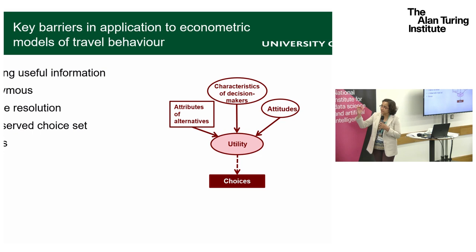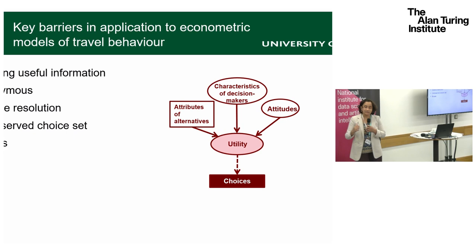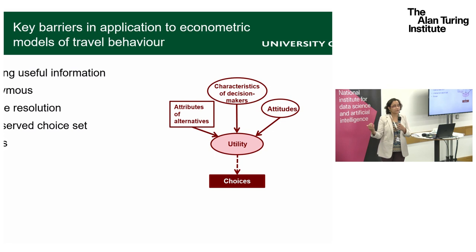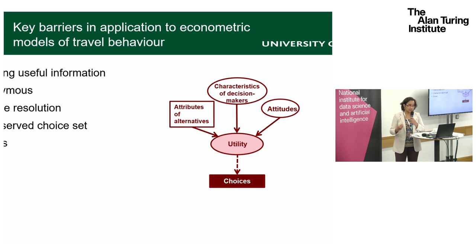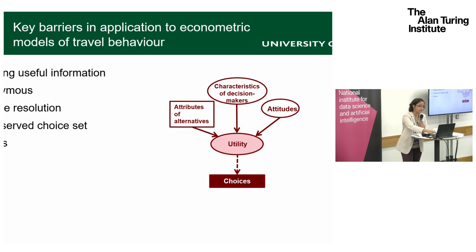The key barriers we face when using mobile phone data for traditional travel behavior models are: first, inferring useful information, because mobile phone data is very coarse in resolution and not readily available in the form we get from surveys. Second, the data is anonymous, and as shown earlier, sociodemographic characteristics play a big role in travel decisions. Third, the resolution is coarse both spatially and temporally, requiring special treatment to make it usable. Also, choice sets are not readily observed, and there are biases — not everyone has a mobile phone, and not everyone uses them at the same rate.